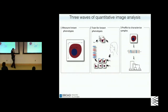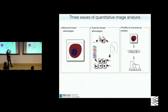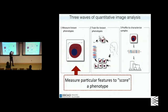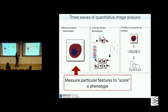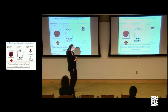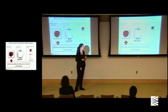I want to take you through three ways of quantitative image analysis, starting from the simpler and moving towards the more complex. Let's begin with the case where you know exactly what you want to measure in the image. You have a pile of images — you might otherwise score them by eye, but you'd rather have an automated solution because it's faster or more objective.